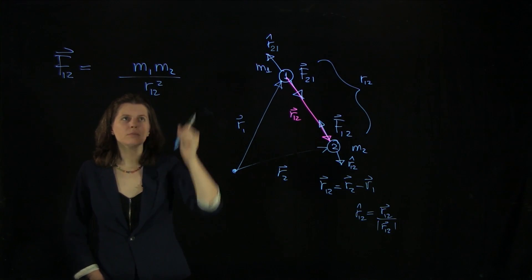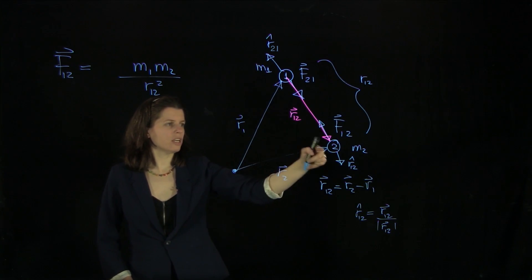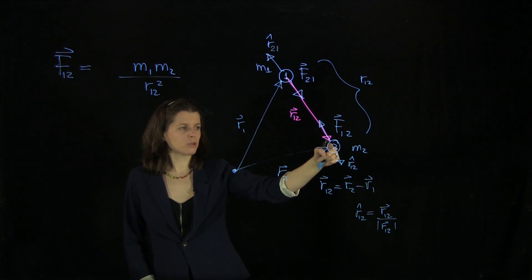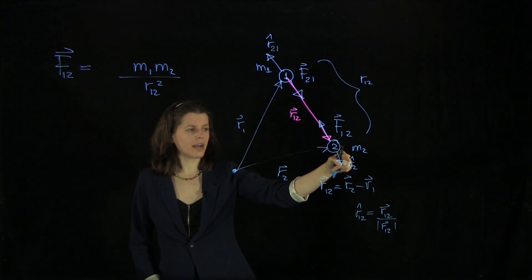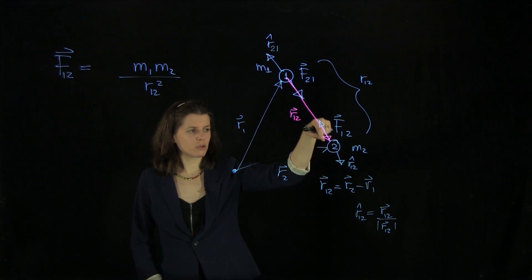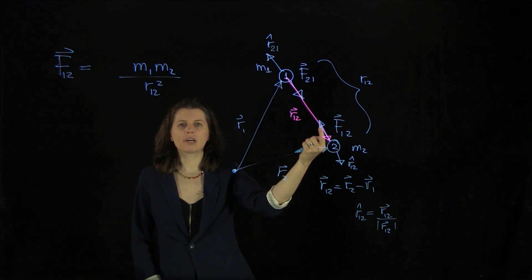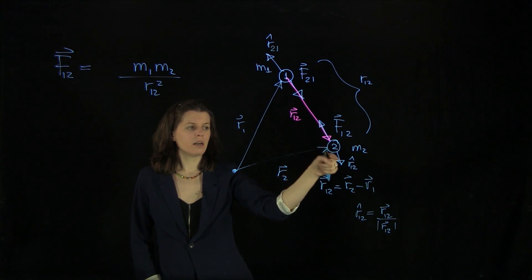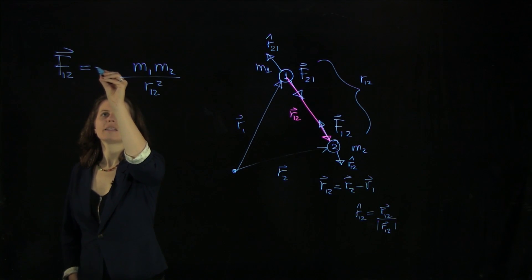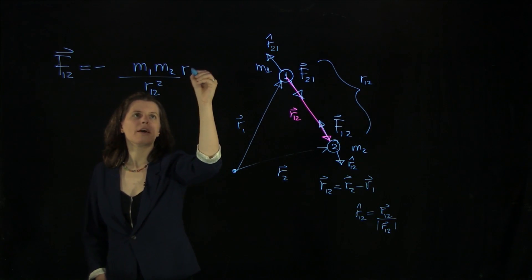But what about the direction? The direction here, we were looking at object two. We placed our r-hat unit vector to point down. But the force is going in the opposite direction. So in the negative r12 hat direction. So we have to add a minus here and then r12 r-hat.